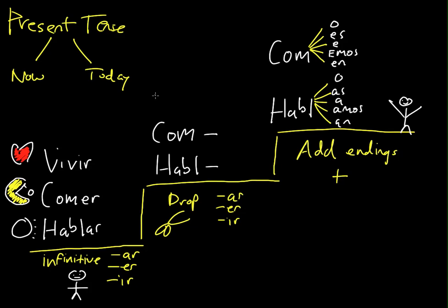So VIVIR. So the second thing to do is, just like Hablar and Comer, we're going to take off, in this case, the IR. And now we're going to climb the mountain again. And so, let's see, I'll write it over here. So now we have VIV.